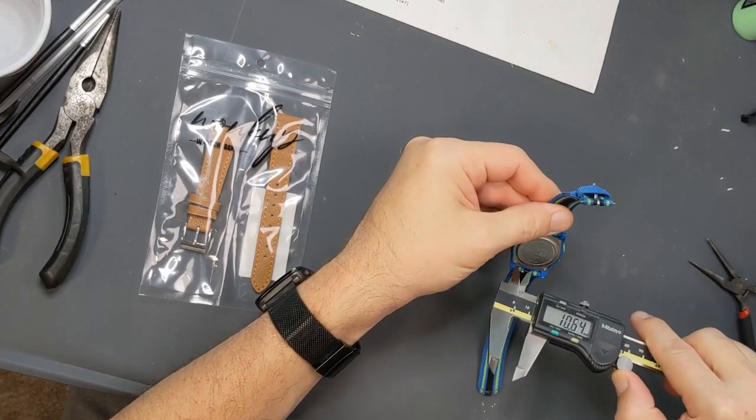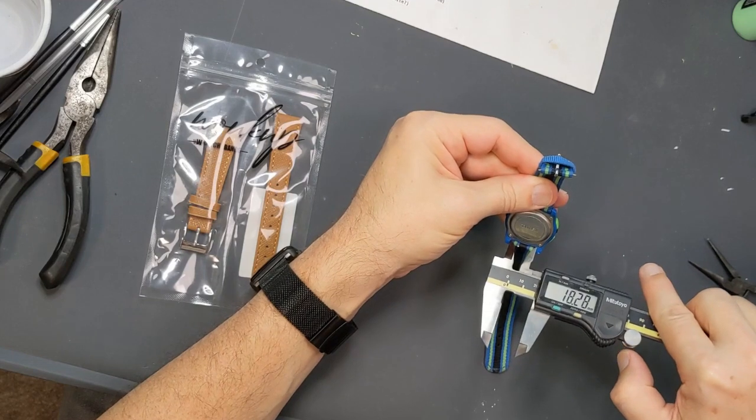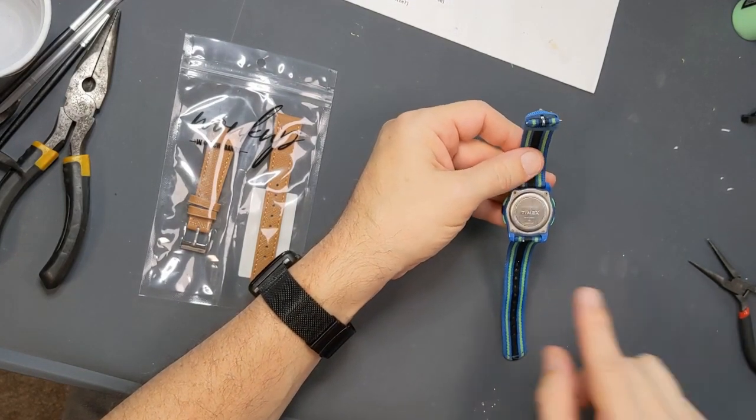So if you measure from the inside of that lug to the inside of that lug, this here says 18.28, which means it's basically 18 millimeter lugs.